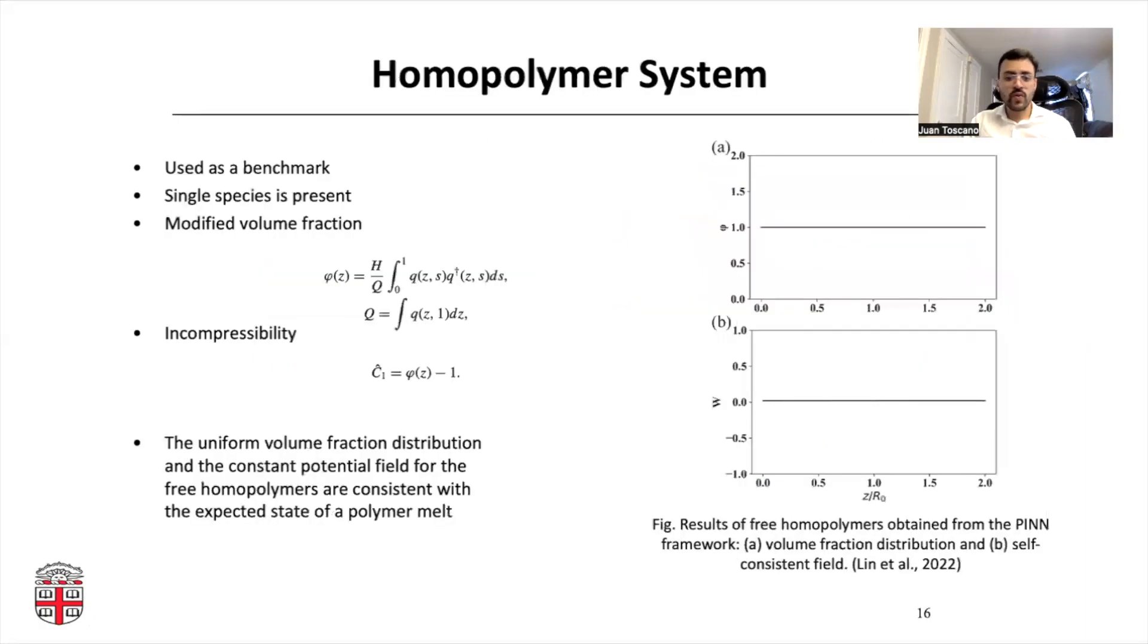Let's see the results for the forward problem. For the homopolymer system, there's not much to say. Everything's the same. So the volume fraction is always going to be one, and the volume fraction distribution is always going to be zero.